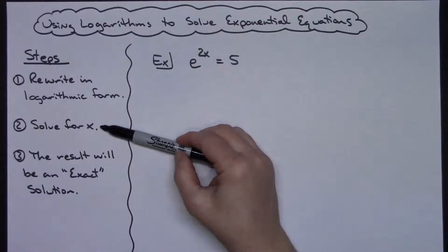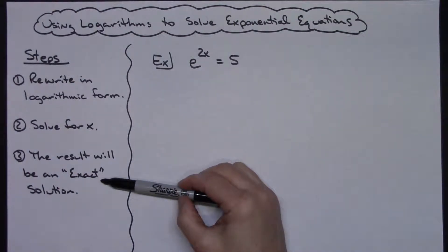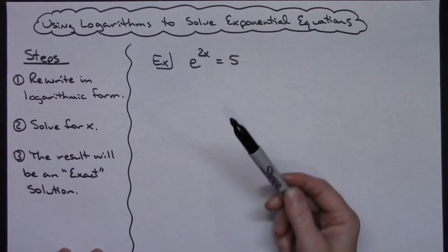Now when I do that, this result is going to have a natural log in it that will give me the exact solution, and then a lot of times you'll have to give that exact solution and then put that into the calculator and also give a decimal approximation.